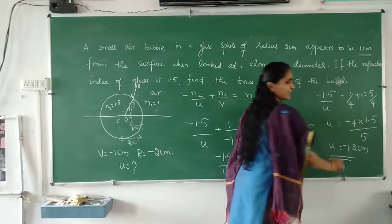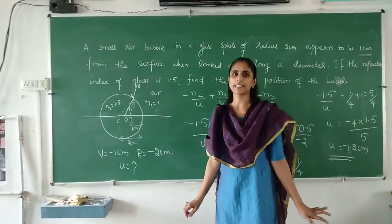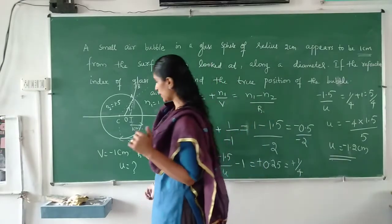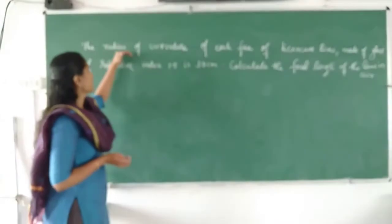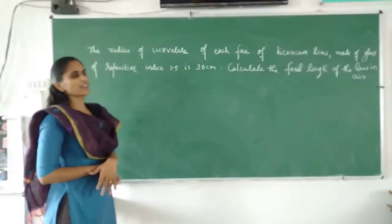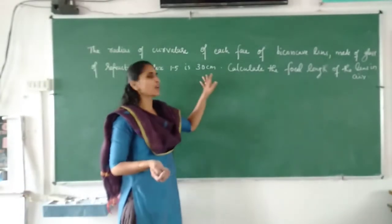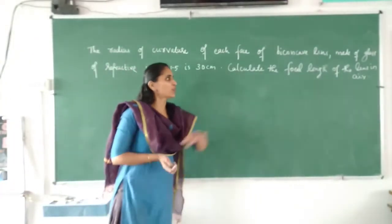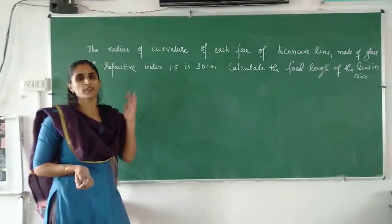That is clear. Now we will proceed to the next problem. The radius of curvature of each surface of an equiconcave lens made of glass of refractive index 1.5 is 30 cm. Calculate the focal length of the lens. For this we have to use the lens makers formula.